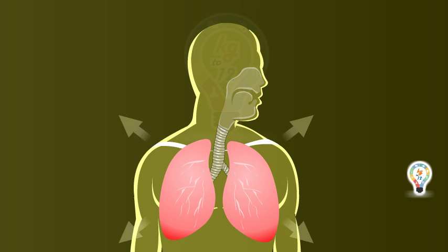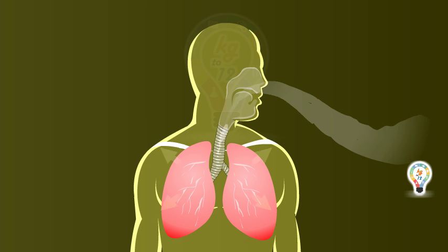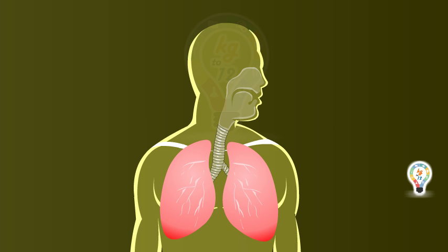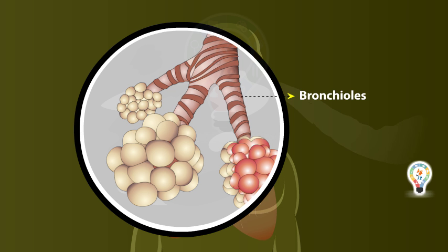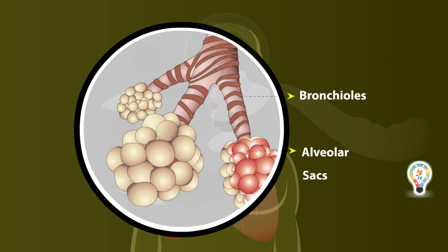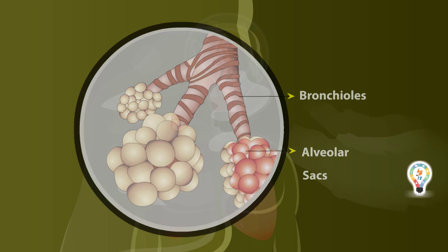Breathing occurs because of the expansion and contraction of lungs. In each lung, the bronchus divides into thinner tubes called bronchioles. At the end of each bronchiole are the alveolar sacs, which are surrounded by blood capillaries and contain millions of single-layer alveoli cells where gas exchange takes place.